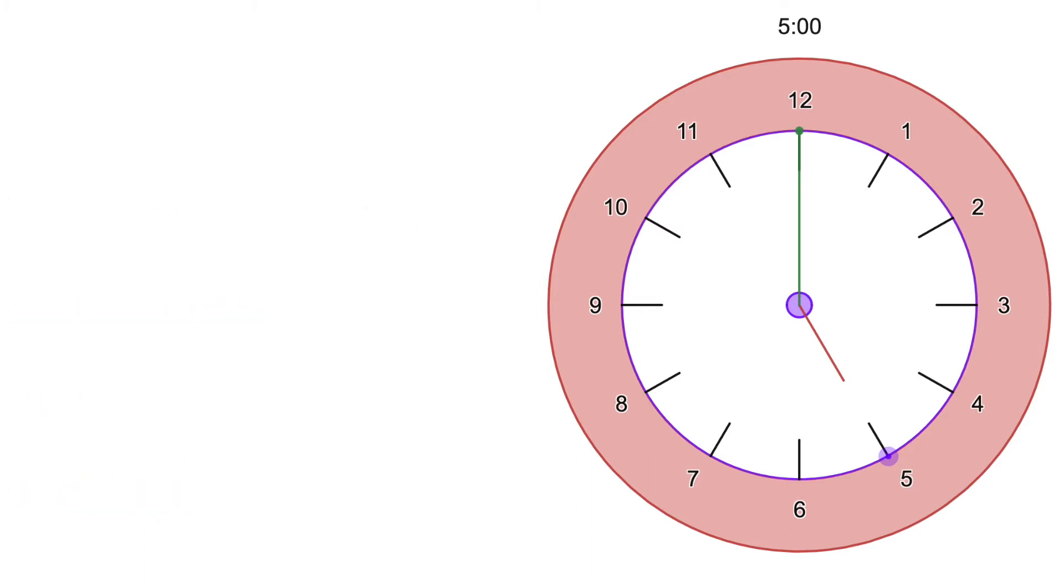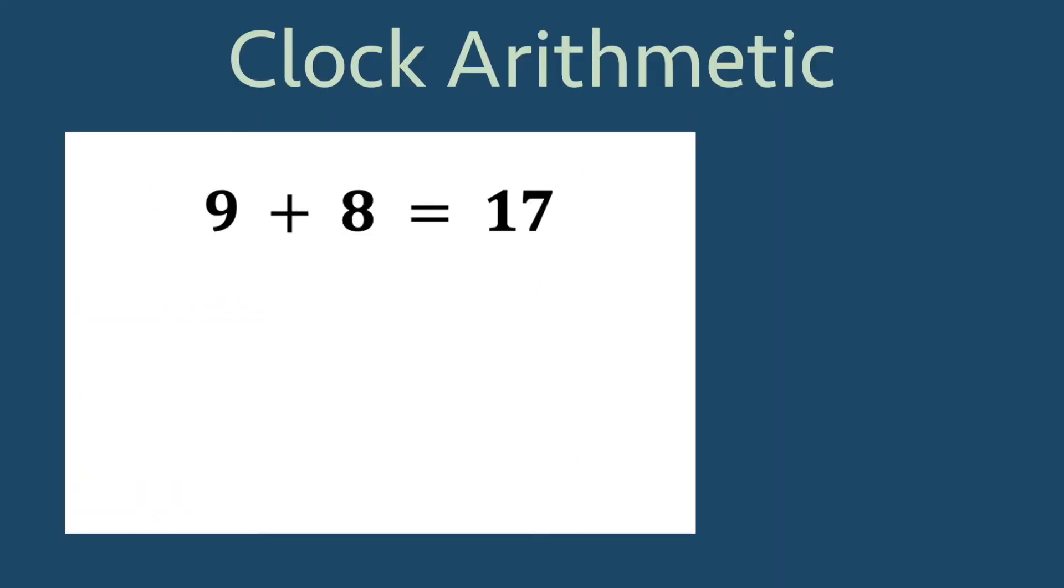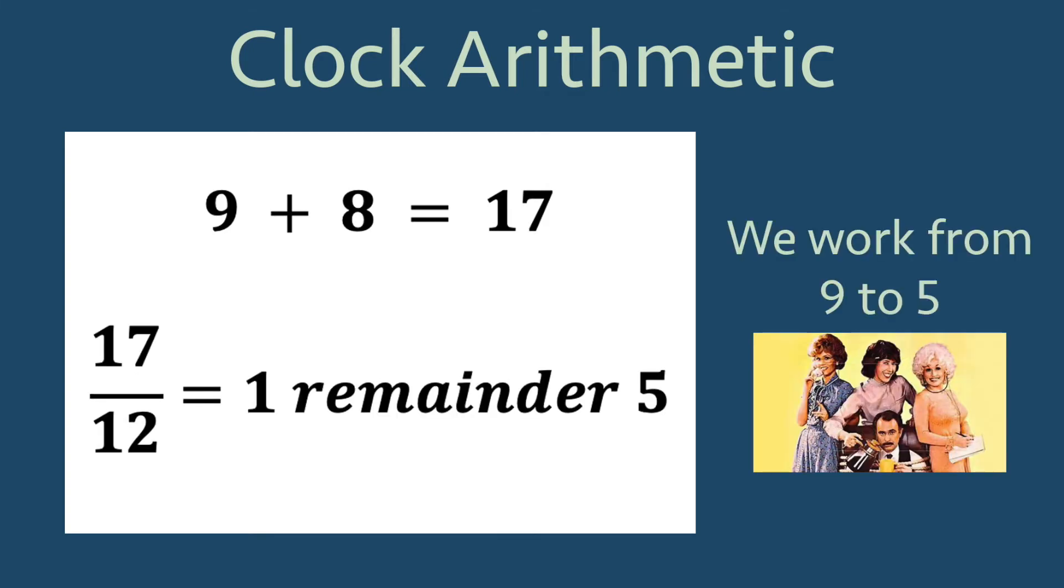However, there is another way to calculate this. We can add 9 plus 8 equals 17, and then divide by 12. The remainder after division is 5, which becomes our answer.